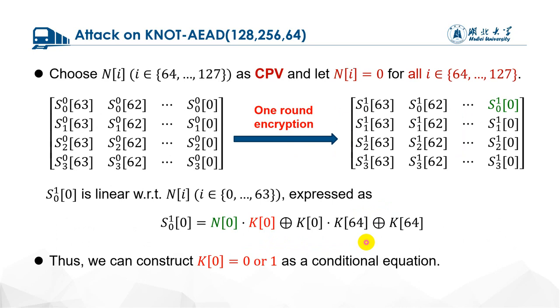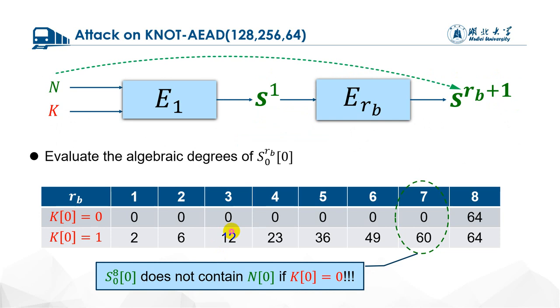We first need to linearize the one-round intermediate state. We can choose the higher 64 bits of nonce as CPV and let them all equal to zeros. Then the first bit, S_1[0], can be expressed as this. Note that N[0] is multiplied by K[0]. So literally, we can use K[0] to construct conditional equations.